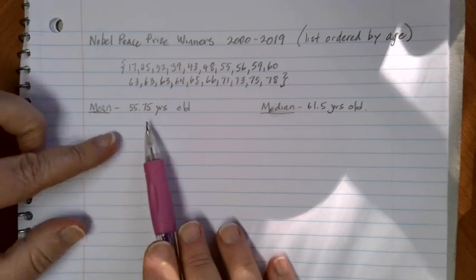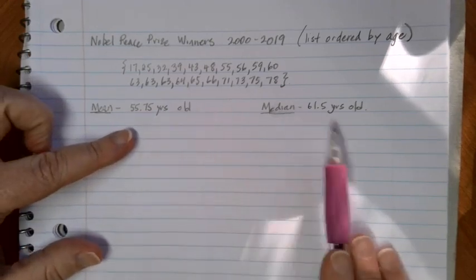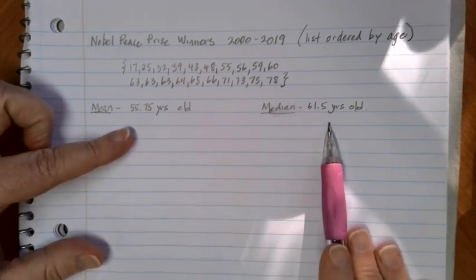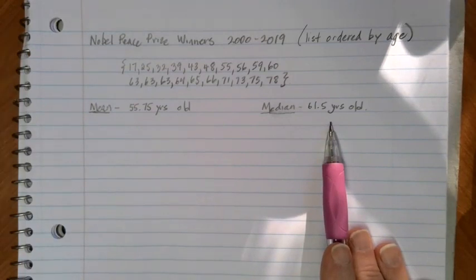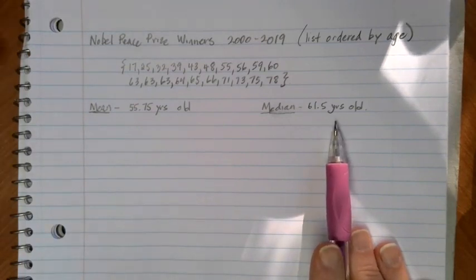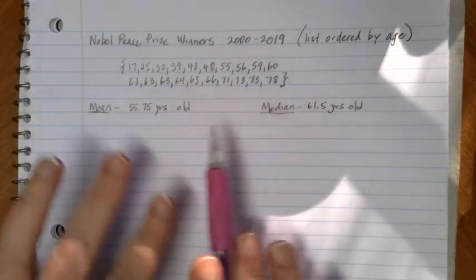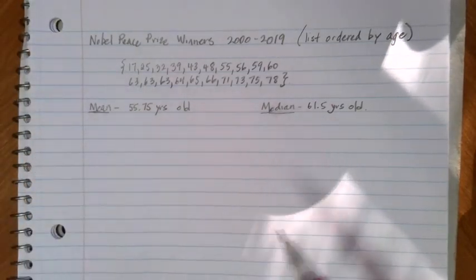We calculated the mean to be 55.75 years old and the median to be 61.5 years old. This is really great information - it gives us an idea of a typical age where someone wins the Nobel Peace Prize, somewhere in their late 50s early 60s.